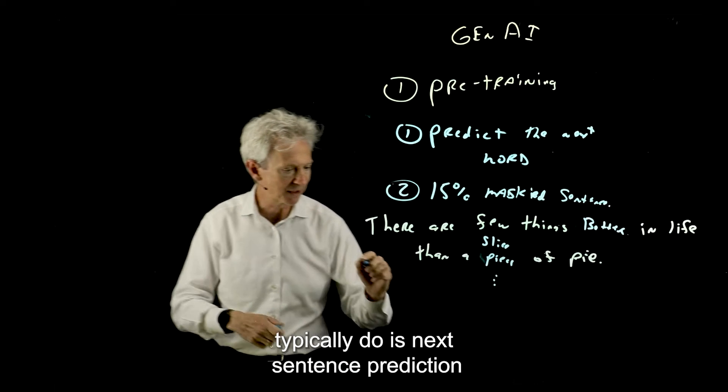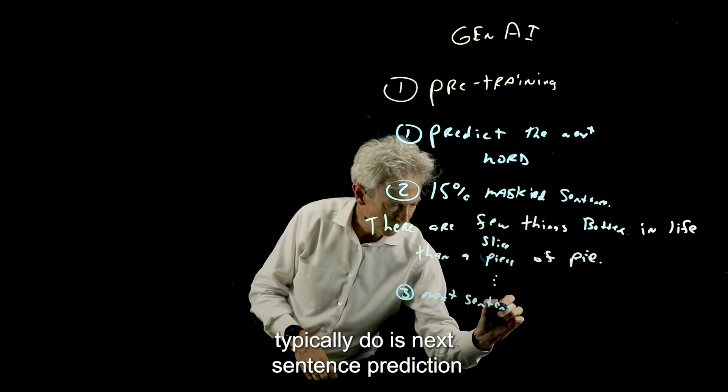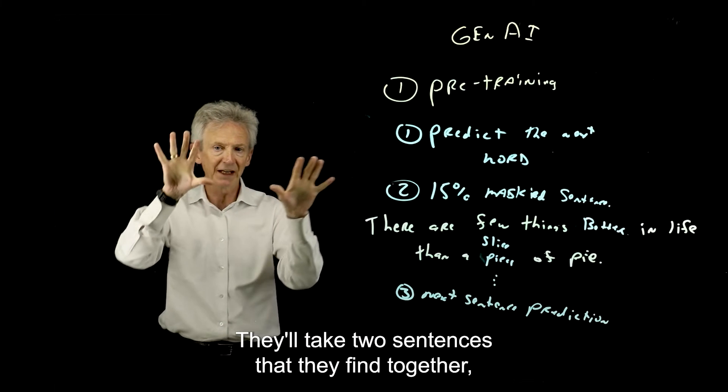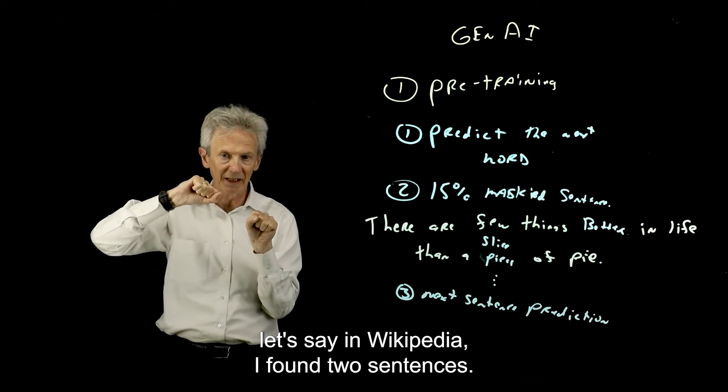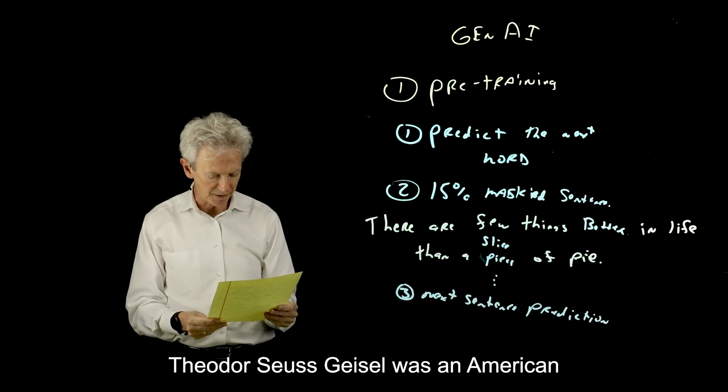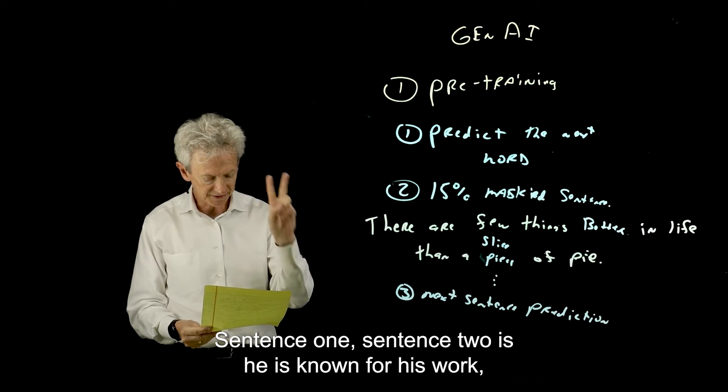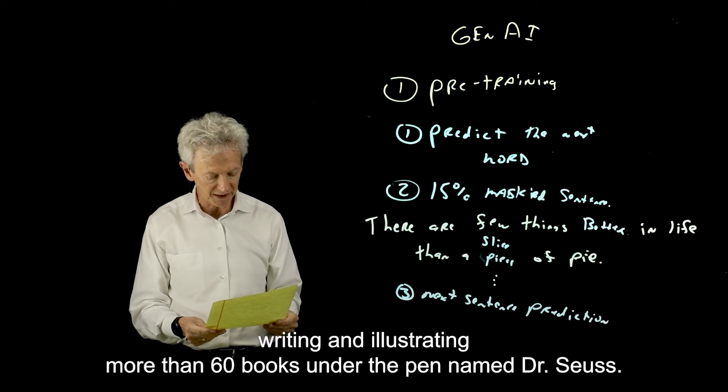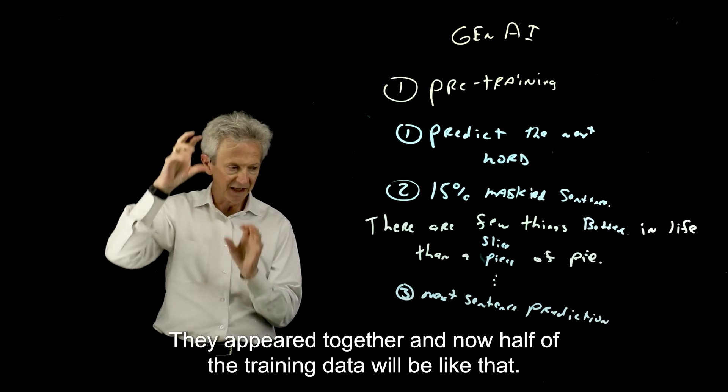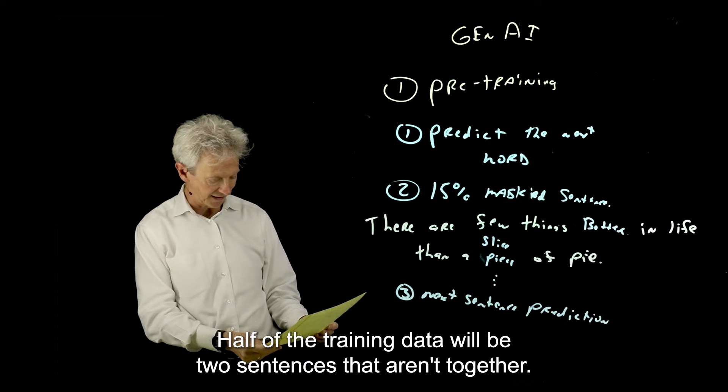The third task they typically do is next sentence prediction. What they will do is, for half of the training data, they'll take two sentences that they find together. Let's say in Wikipedia, I found two sentences: 'Theodore Seuss Geisel was an American children's author and cartoonist.' Sentence two is, 'He is known for his work writing and illustrating more than 60 books under the pen name Dr. Seuss.' So these are two sentences. They appeared together and half of the training data will be like that.